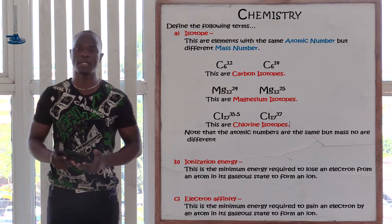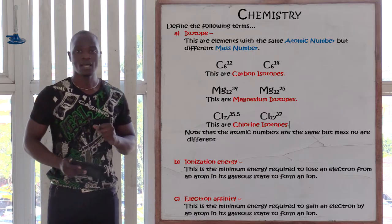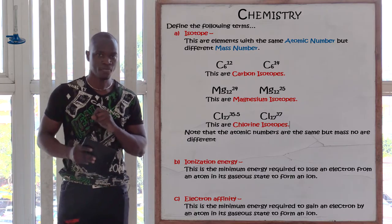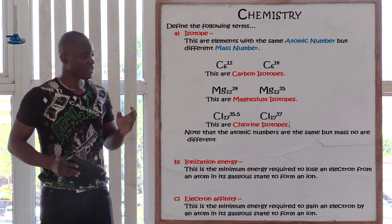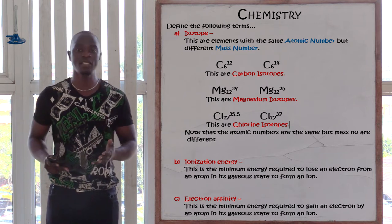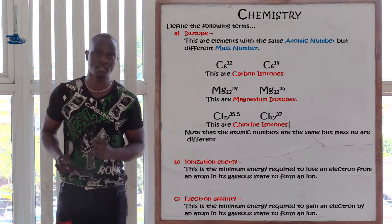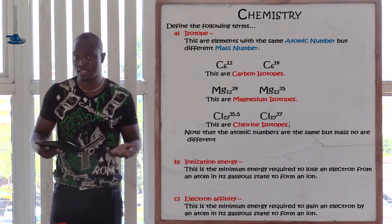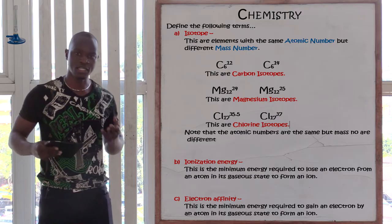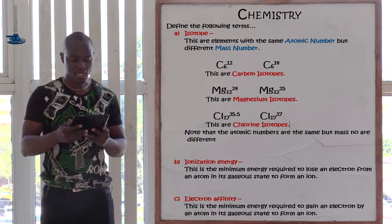We also have chlorine. Chlorine is atomic number 17 with mass number 35.5. We also have chlorine with the same atomic number 17 but mass number 37. Since they have the same atomic number but different mass number, that is referred to as an isotope.